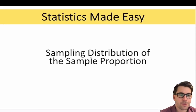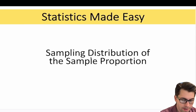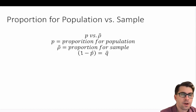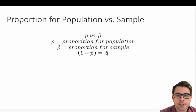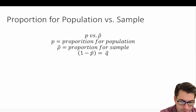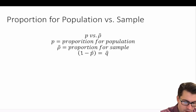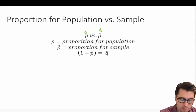In this video, we're going to talk about the sampling distribution and the sample proportion. When we're talking about sampling proportions, we should differentiate between the proportion of a population and the proportion of a sample. We do that by letting p-hat represent our proportion for our sample, and p represent the proportion of our population.